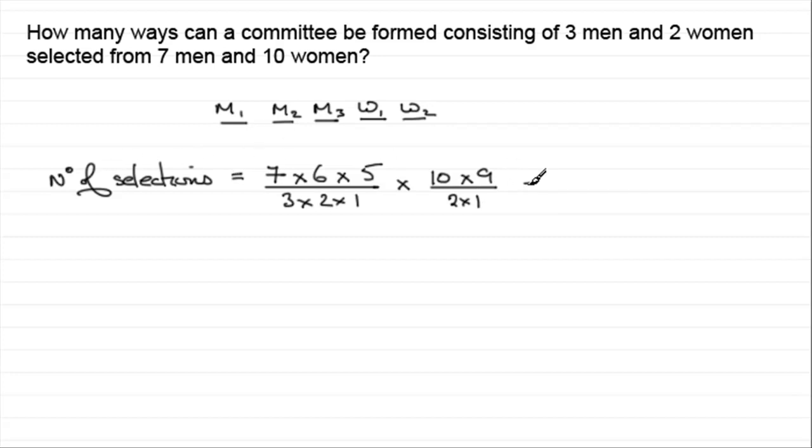But you could have done this particular one by using the combinations formula. Because we haven't got any repetition or any other restrictions. So therefore, you could have said, well, okay, I've got seven men, and I want to choose three of them. So we have 7C3. And then we need to times by the number of ways we can select the women. So from ten, choose two. So ten, choose two.